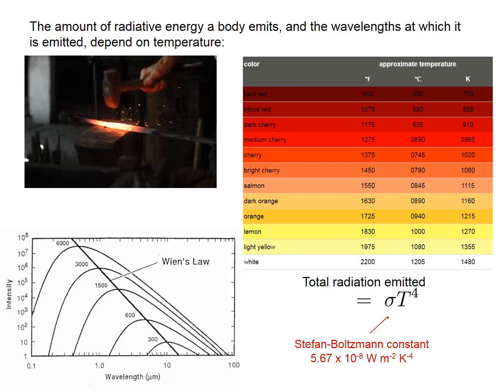There is a rule we're going to use: the total radiation emitted — the area under the graph for any temperature — is calculated by taking the temperature in Kelvin raised to the fourth power and multiplying by the Stefan-Boltzmann constant. That gives you the energy flux being released — the power per unit area. So the energy flux radiated from an object is σT⁴, where σ is the Stefan-Boltzmann constant.